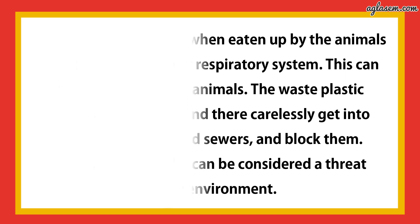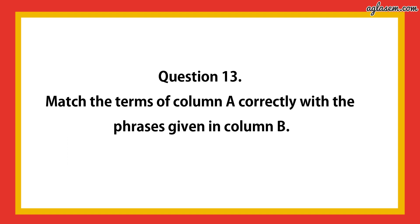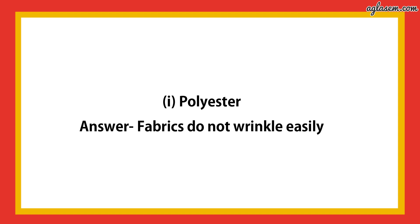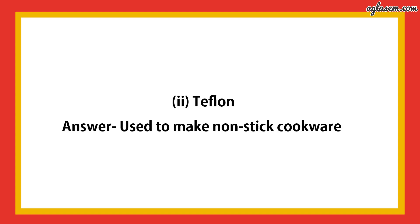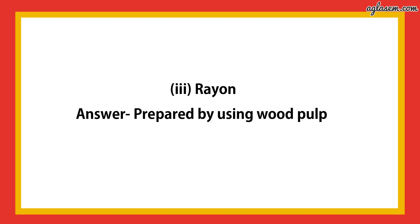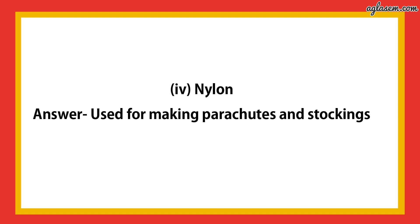Question number 13: match the terms in column A with the phrases in column B. Polyester — fibers do not wrinkle easily. Teflon — used to make non-stick cookware. Rayon — prepared by using wood pulp. Nylon — used for making parachutes and stockings.